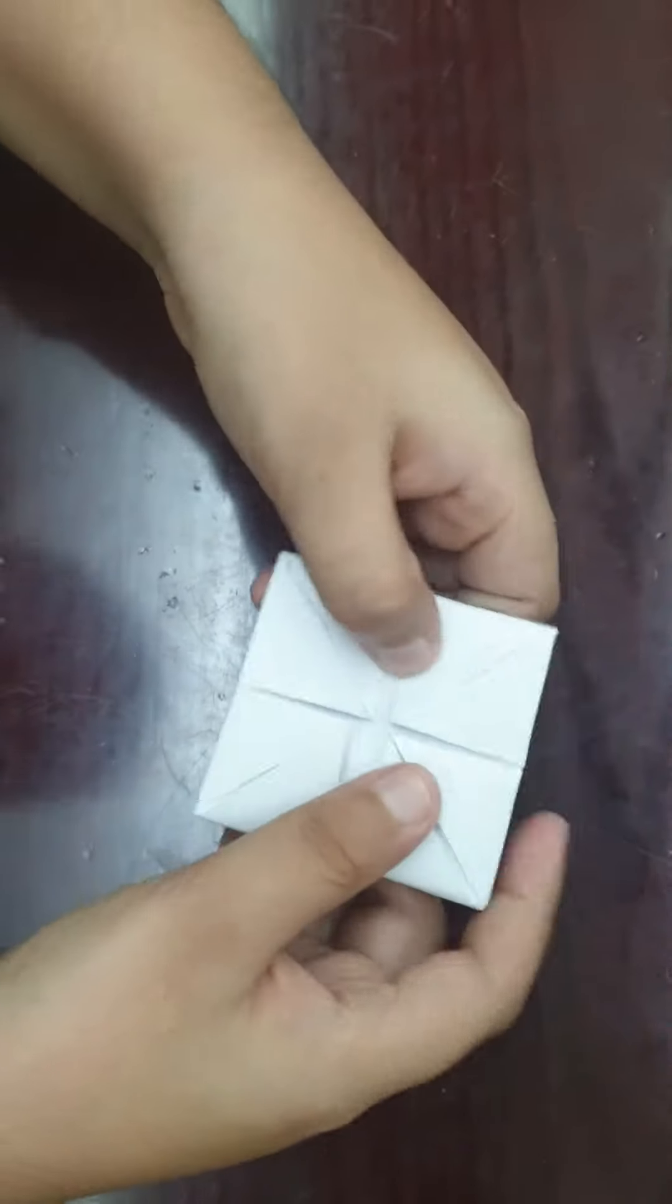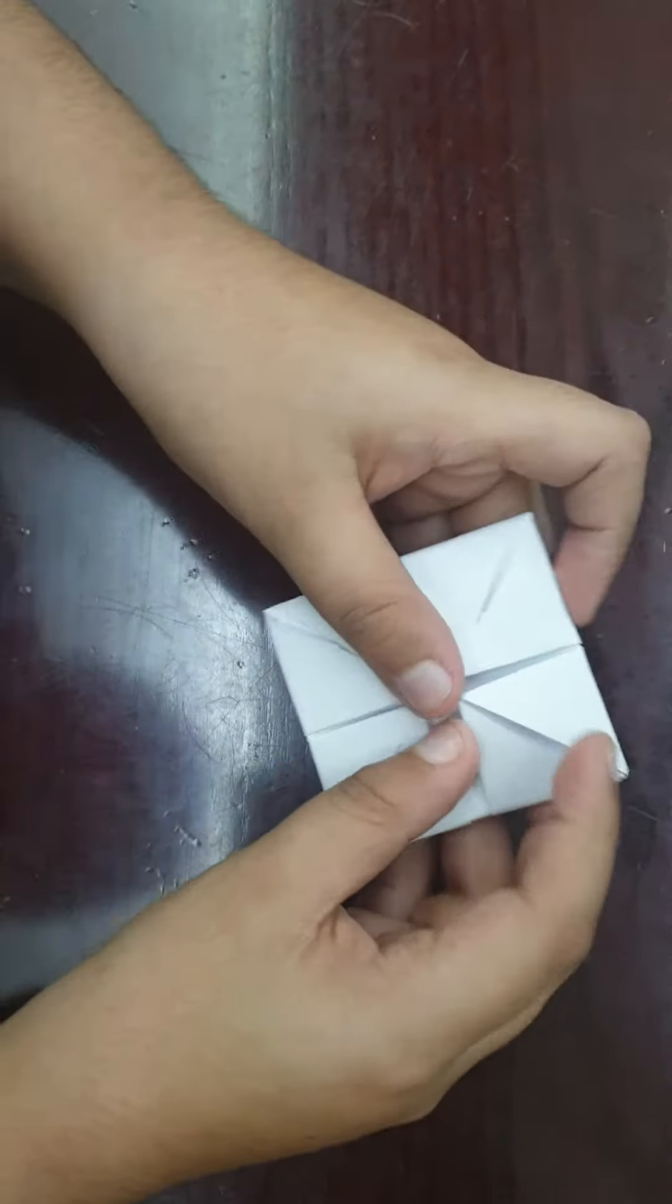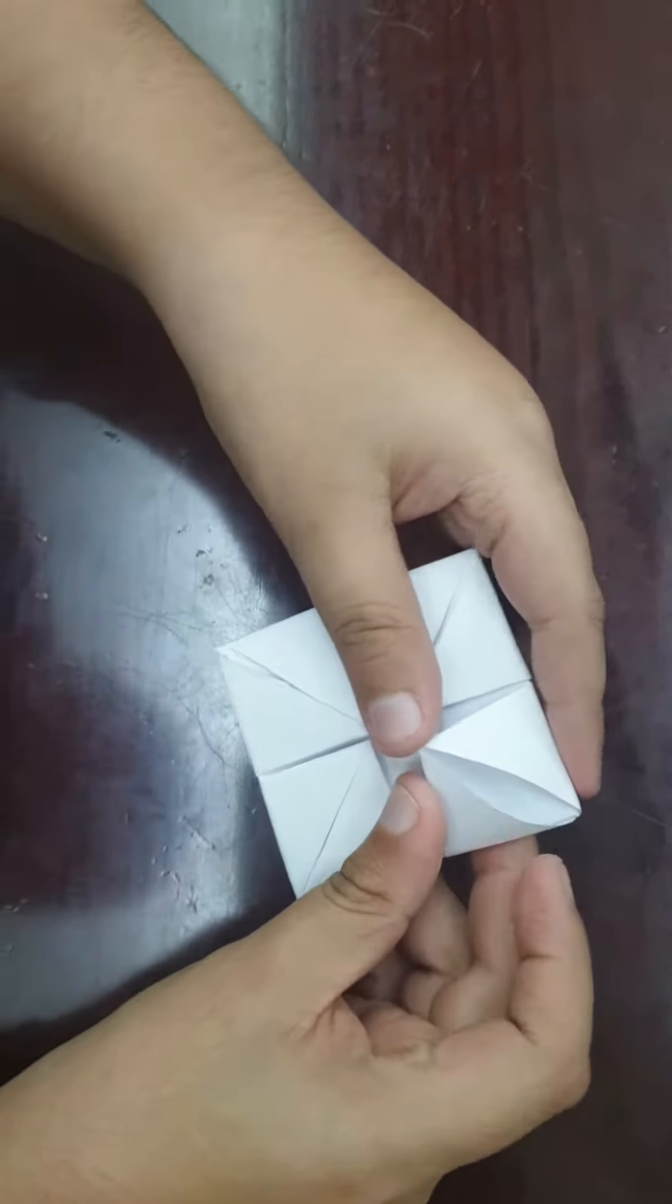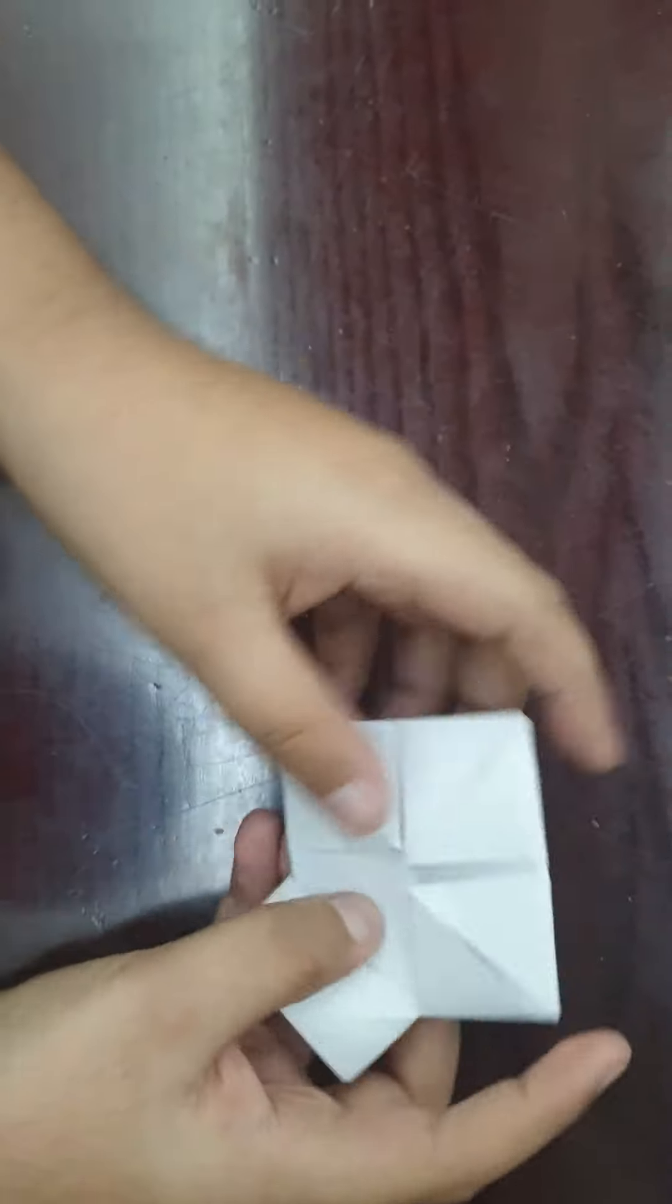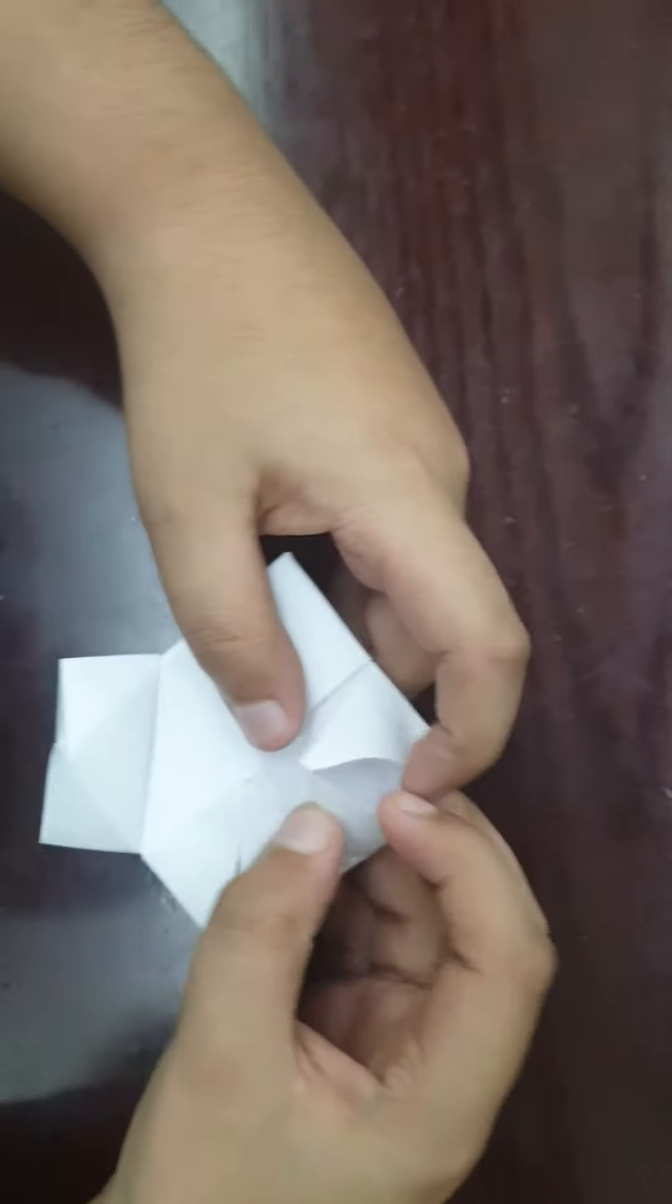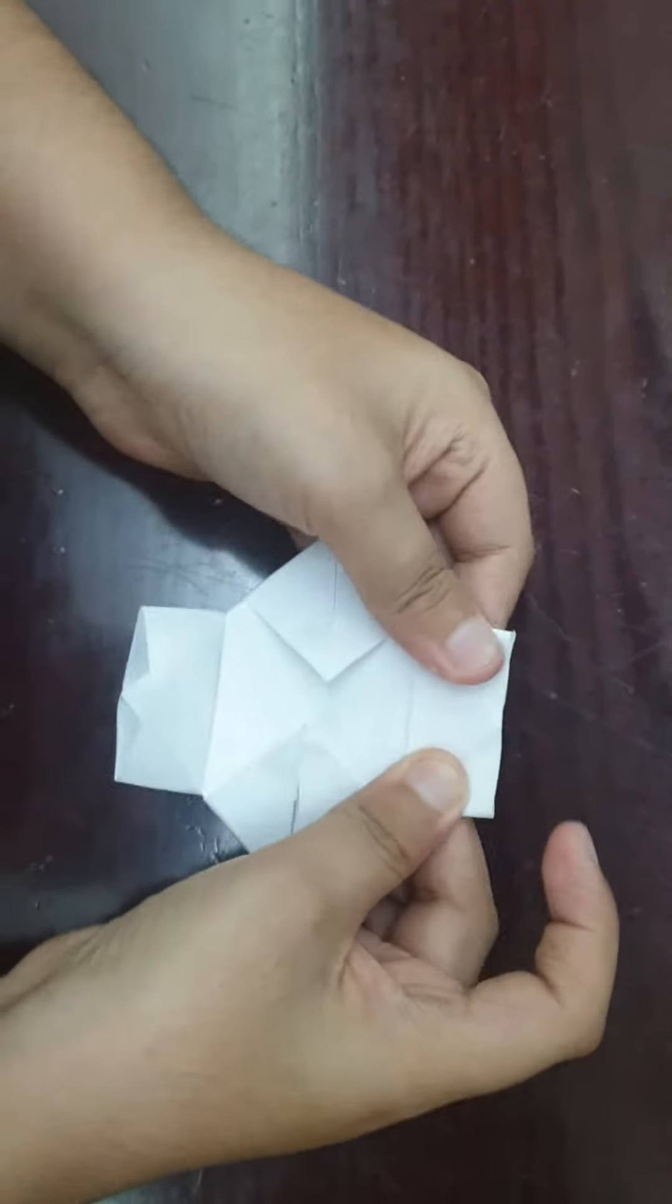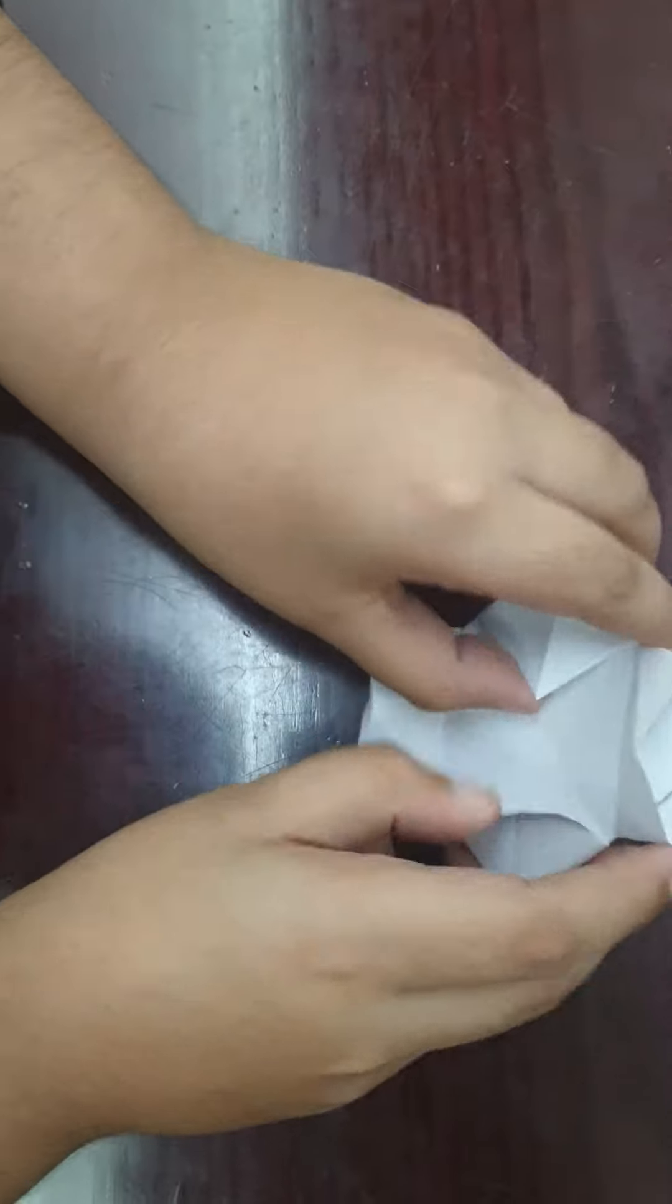Now I am rounding the paper, then we have to do like this. It's like a rectangle. Do it like this, then open it like this.